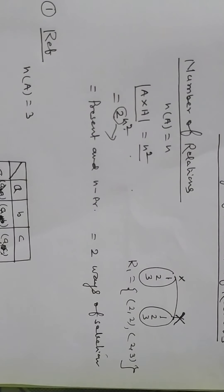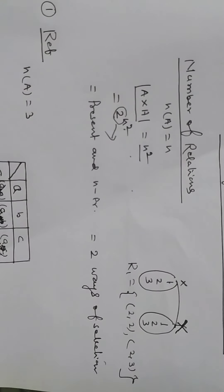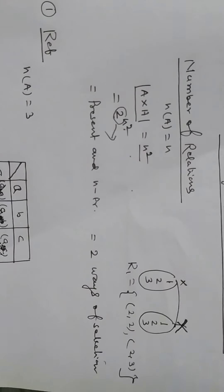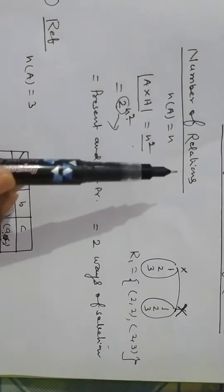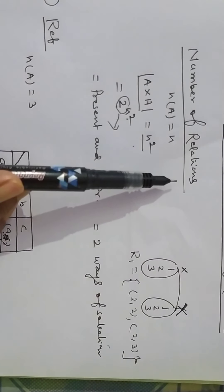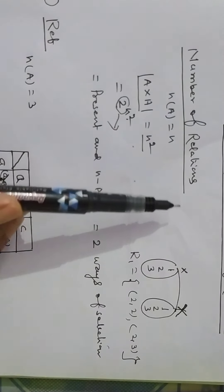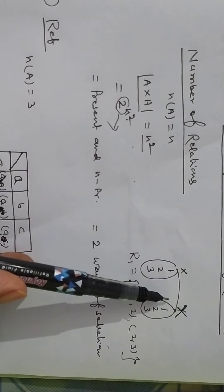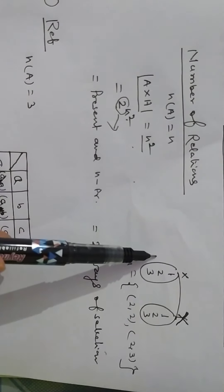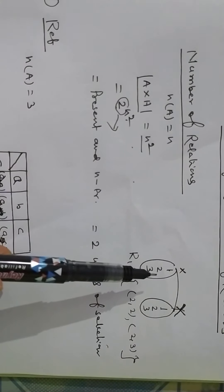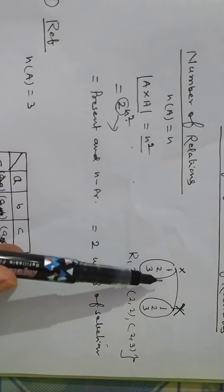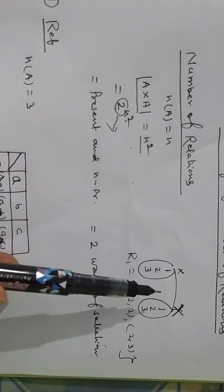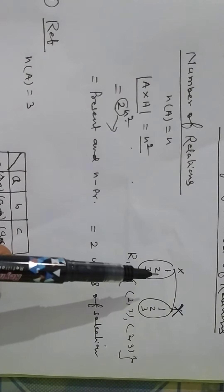Now, let us start. How will you count the number of different types of relations? Before starting the counting of relations, I want to advise you: we want to count the relation between set X and set Y, and here we count the relation between set X to set X. If we count the relation between set X to set X, then it is known as binary relation or relation on A. And if the relation is binary or relation on A, then it is reflexive, symmetric, transitive, anti-symmetric.